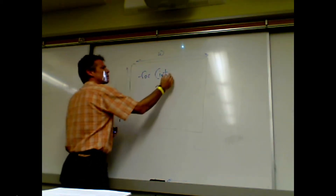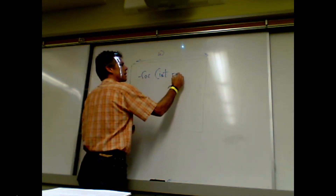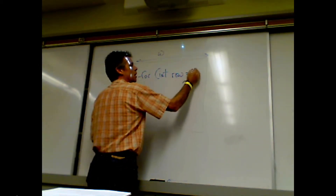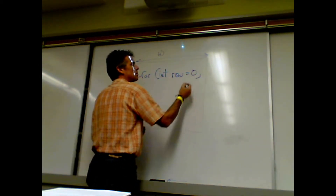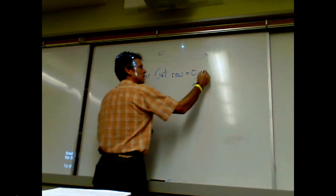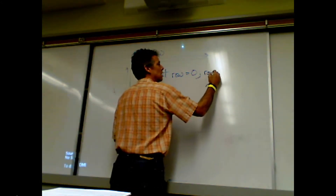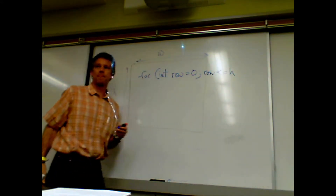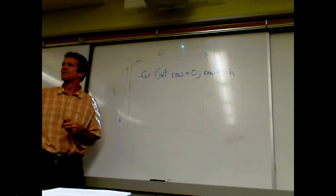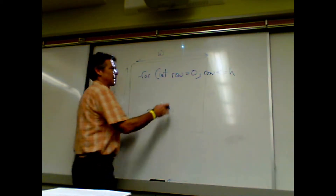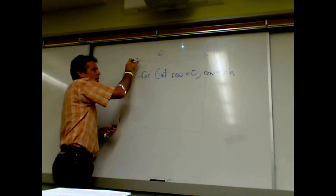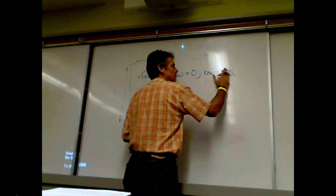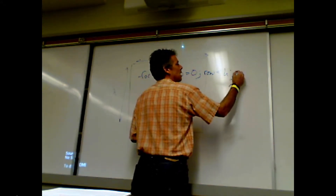The class reviews the loop structure. They went through rows first. Row starts at zero, row is less than height — just less than, not less than or equal — because the height is a full number and they're starting at zero, so less than height. Then row plus plus.